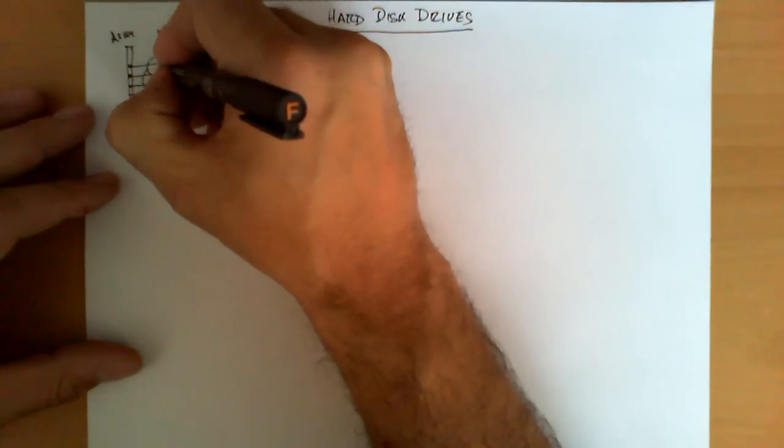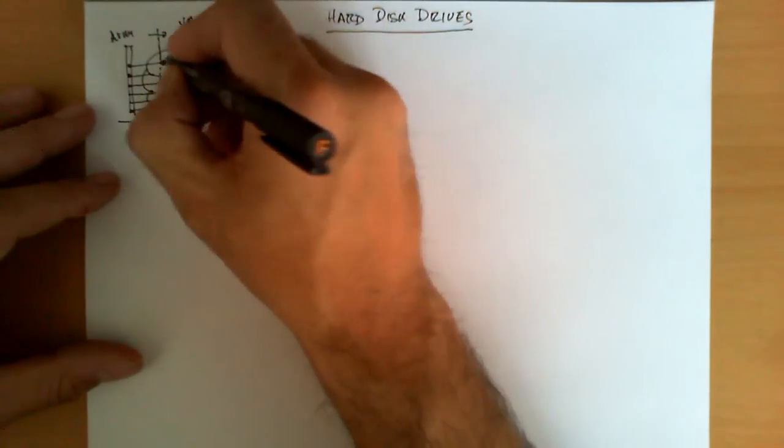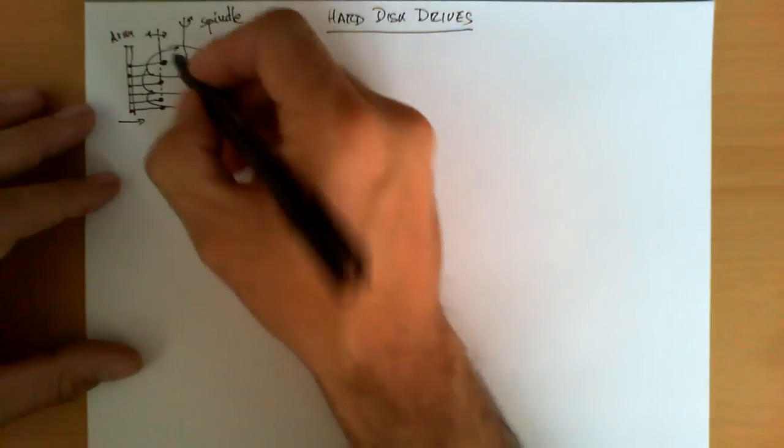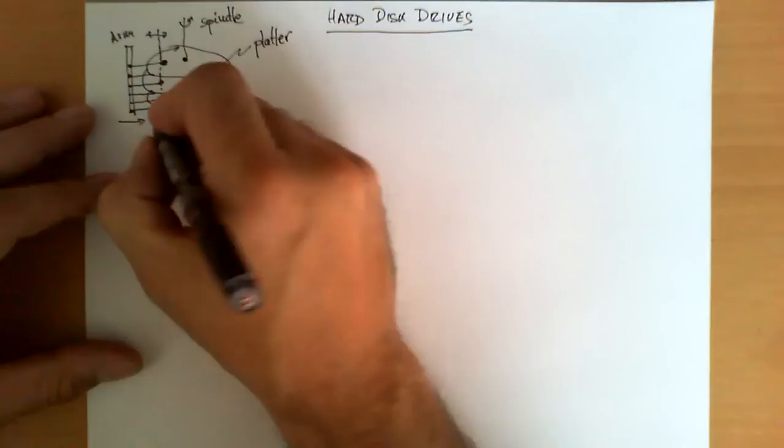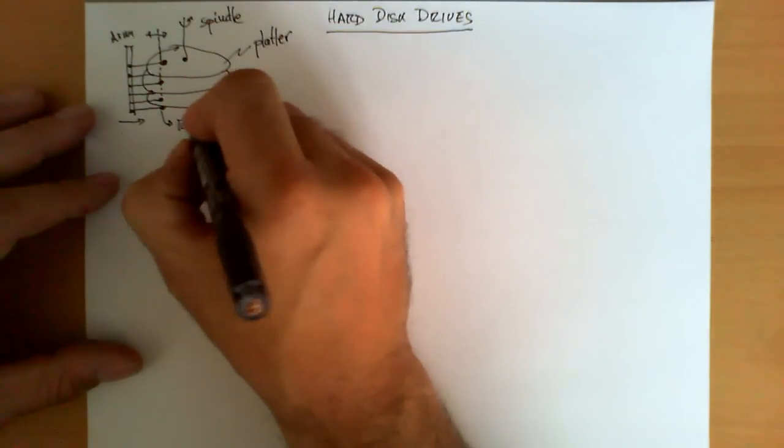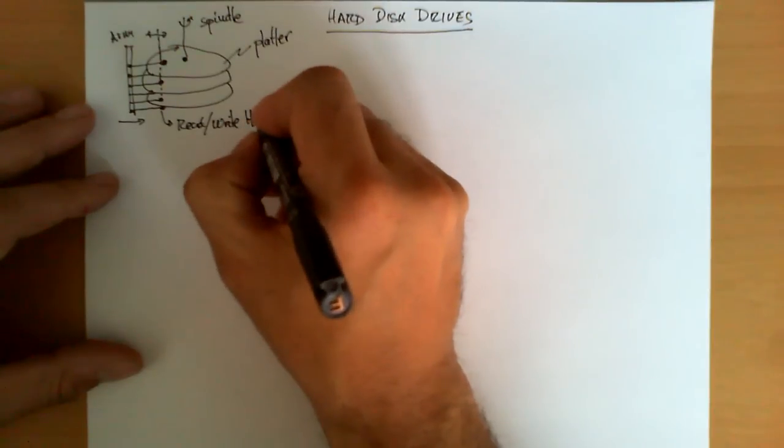So these read-write heads, what they're doing is they advance towards the center of the disk or towards the edge of the disk and position themselves in different locations to read different tracks, as we're going to see right away.